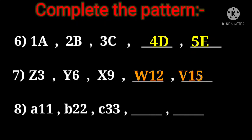Now come to question number 8. It is given small alphabet a, 11. Then small alphabet b, 22. Then small alphabet c, 33. So the answer will be what? Yes, small alphabet d, 44 and small alphabet e, 55.